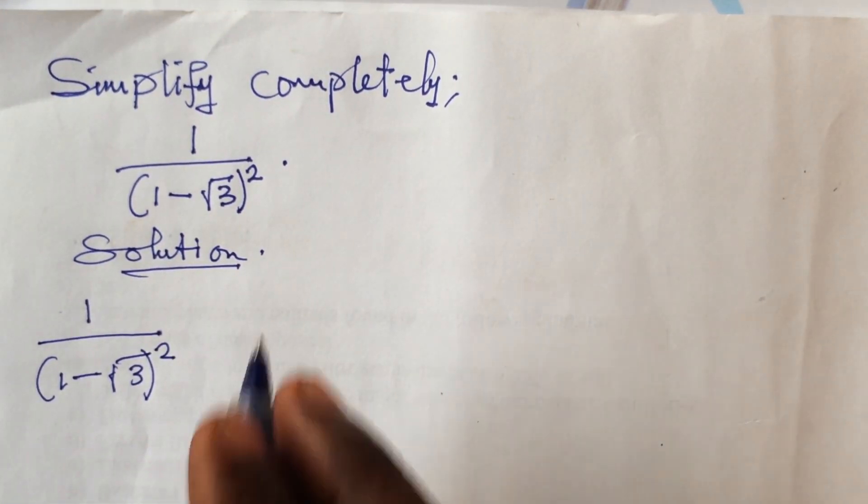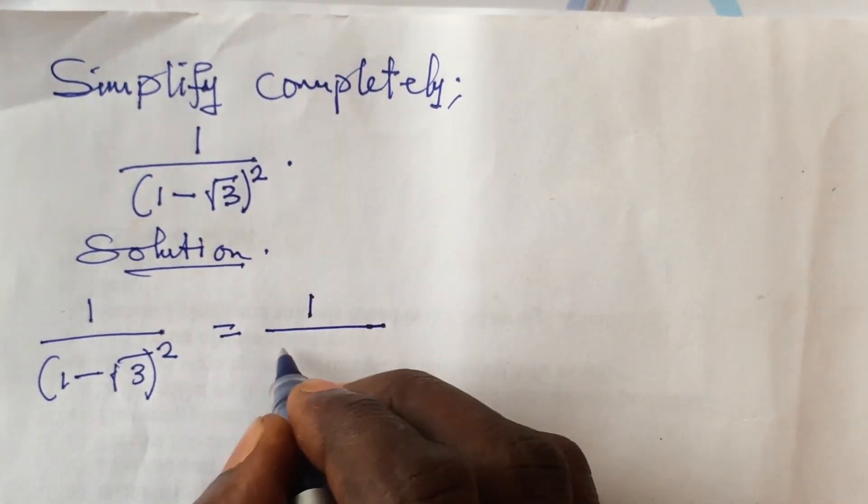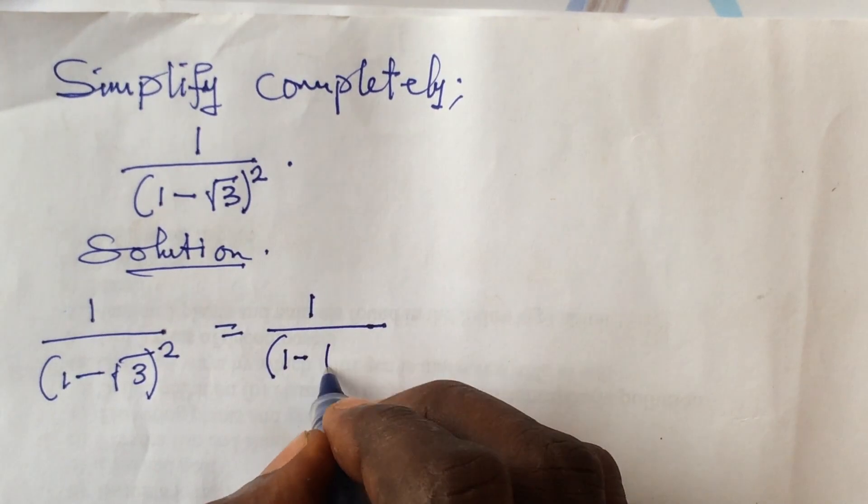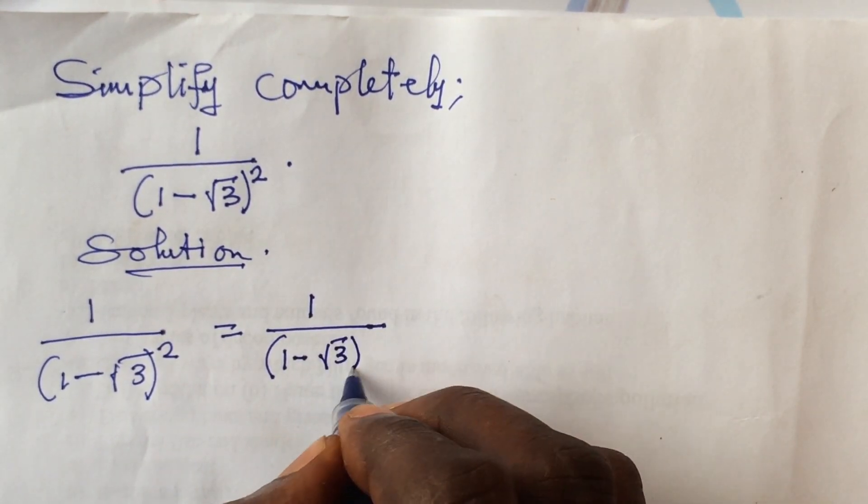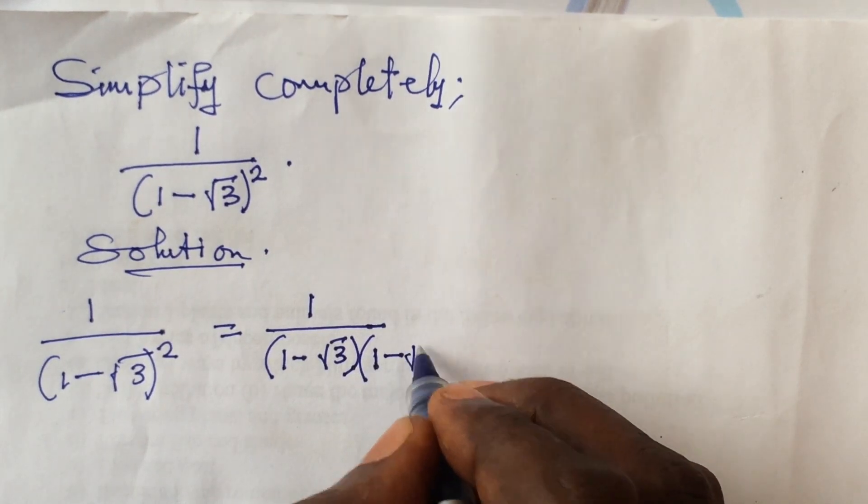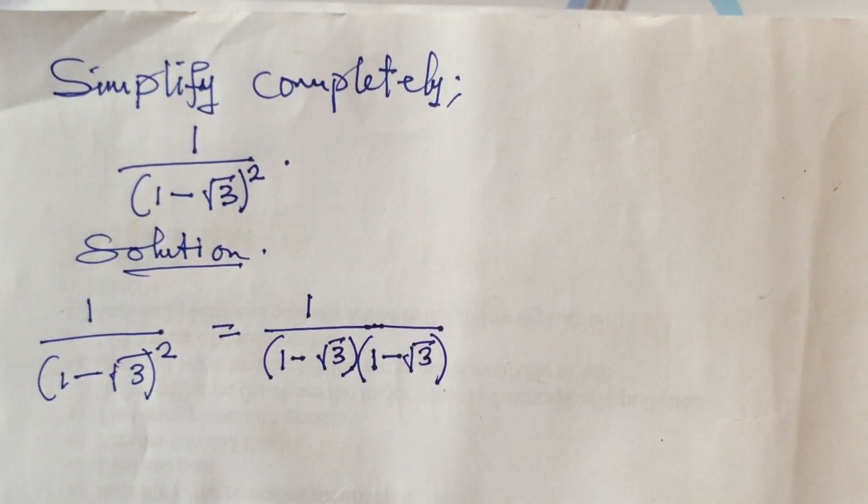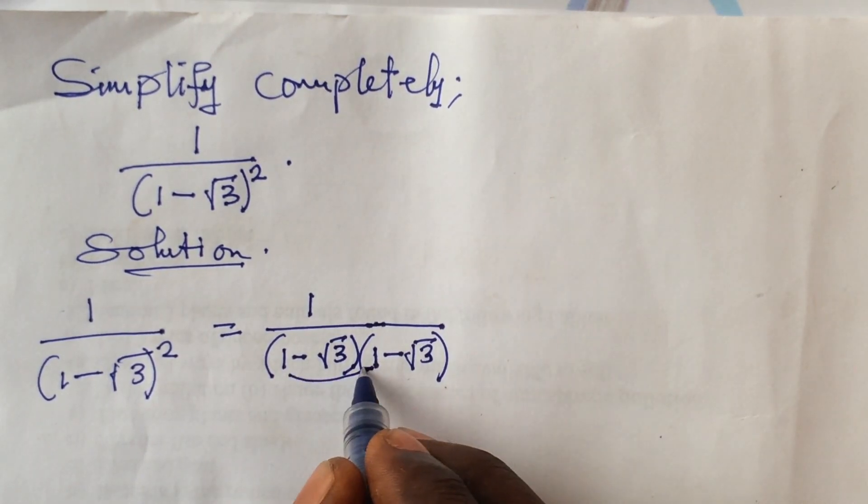Now we can go ahead to open up these two brackets. We use this to multiply this, and use this to multiply this. Then use this root 3 to multiply this one, and this root 3 again to multiply this root 3.